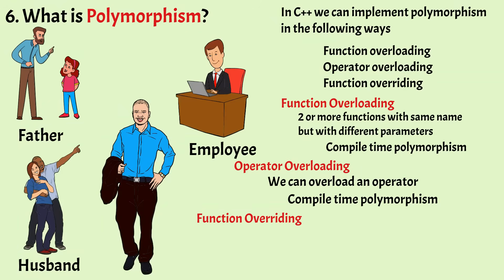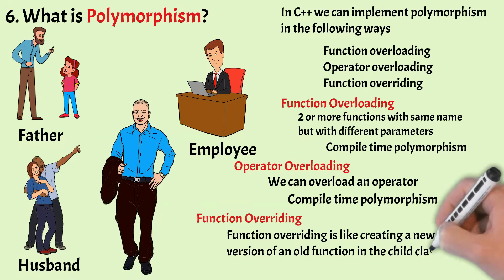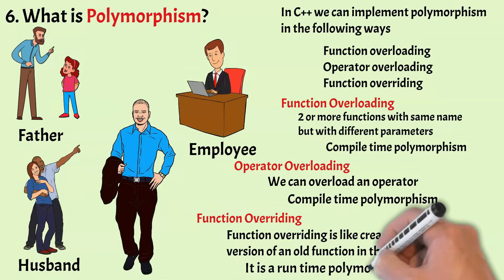Now let's understand function overriding. Function overriding is like creating a new version of an old function in a child class. In C++ inheritance, you can have a function with the same name in both the base class and the derived class. However, when we call that function using the object of the derived class, the function in the derived class is executed instead of the one in the base class. This is known as function overriding. Function overriding is a runtime polymorphism.